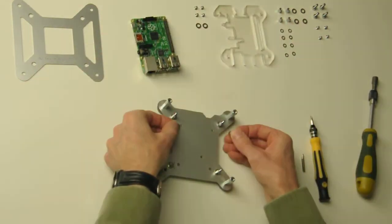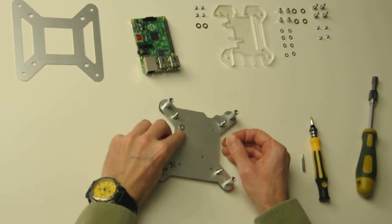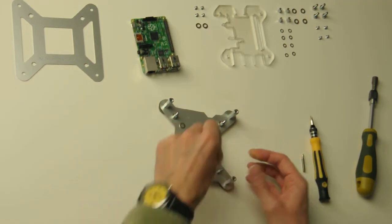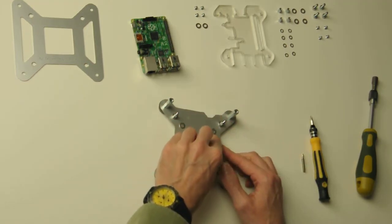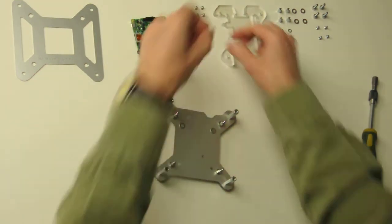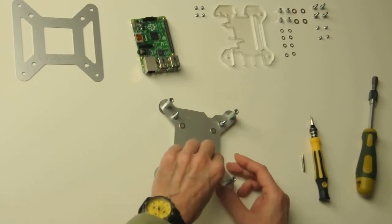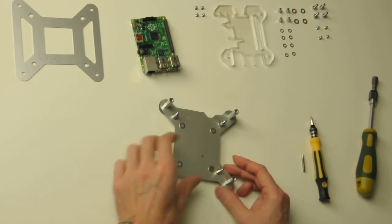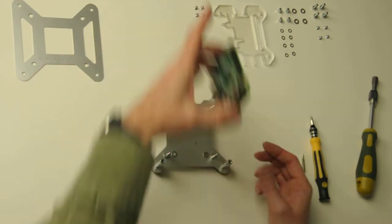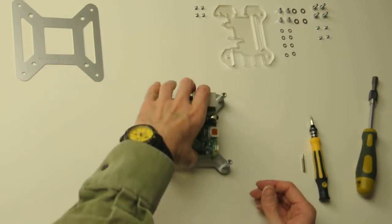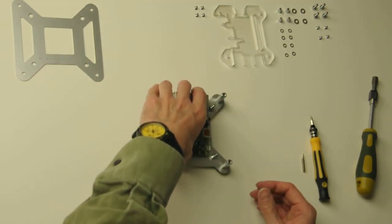Then four washers. So the 5mm long countersunk screws M3 have the cavity for the conical head to go in. Otherwise you would not be able to clamp down your plating material. It would keep on dangling.